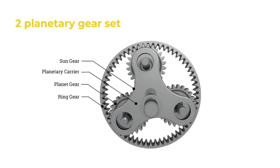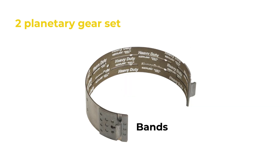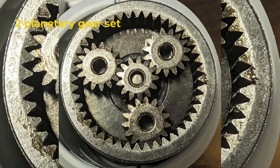The planetary gear set is the core of an automatic transmission. It consists of a sun gear, planet gears, and a ring gear. By locking or releasing different elements using clutches and bands, the transmission creates various gear ratios to adjust torque and speed.